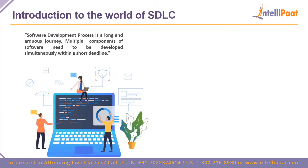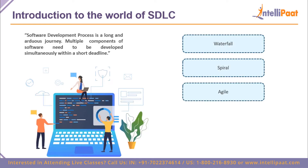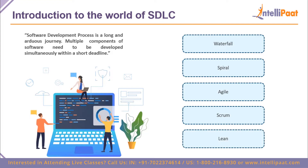There are multiple methodologies out there. For example, you have the waterfall model, spiral model, agile model, scrum, and lean. These software development methodologies basically help to plan out the whole software development life cycle. Each of these methodologies promotes different things, and in this video we'll be comparing the two methodologies: waterfall model and agile model.